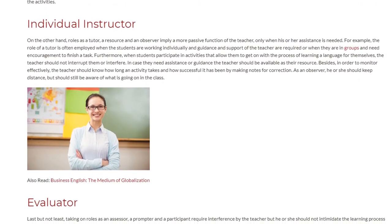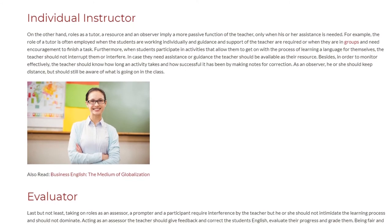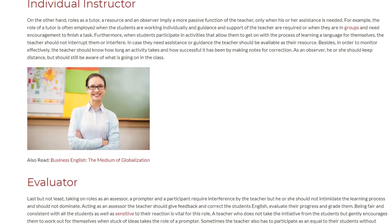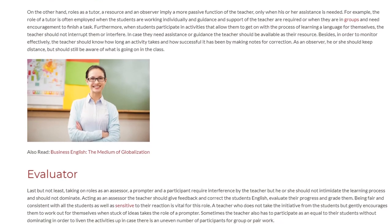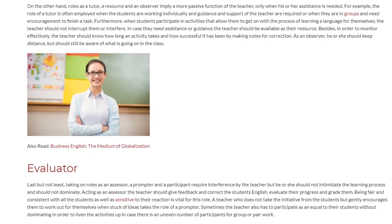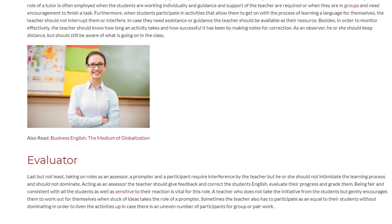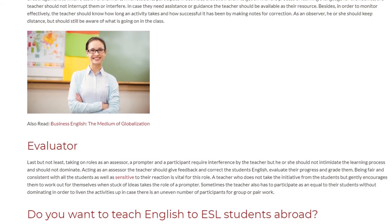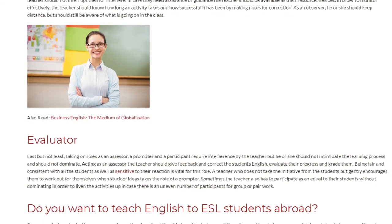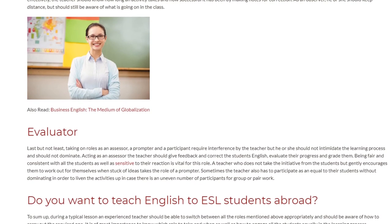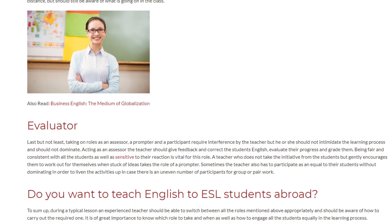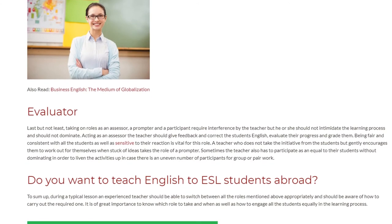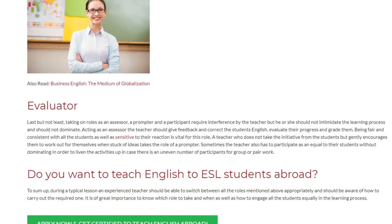Evaluator. Last but not least, taking on roles as an assessor, a prompter and a participant require interference by the teacher, but he or she should not intimidate the learning process and should not dominate. Acting as an assessor, the teacher should give feedback and correct the student's English, evaluate their progress and grade them. Being fair and consistent with all the students as well as sensitive to their reaction is vital for this role. A teacher who does not take the initiative from the students but gently encourages them to work out for themselves when stuck on ideas takes the role of a prompter. Sometimes the teacher also has to participate as an equal to their students without dominating, in order to liven the activities up in case there is an uneven number of participants for group or pair work.